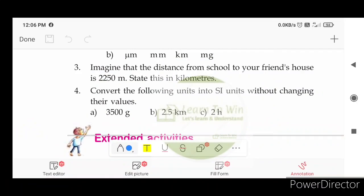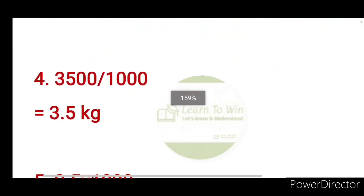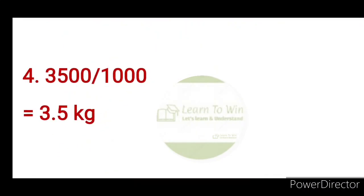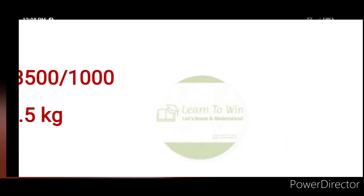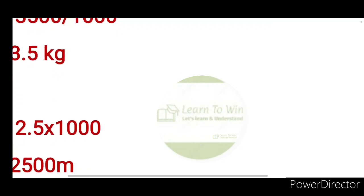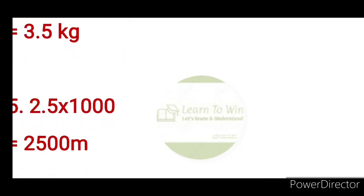30 grams — the SI unit is standardised by kilogram. Then 30 grams divided by 1,000 gives 0.03 kg. 2.5 km — the SI unit is meter.